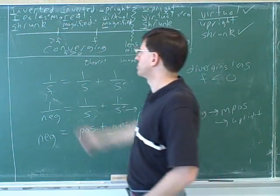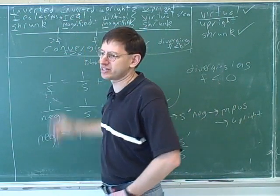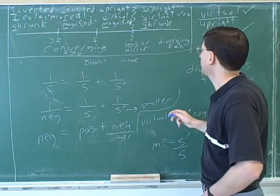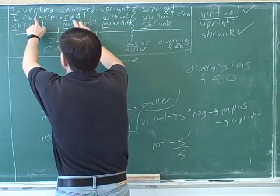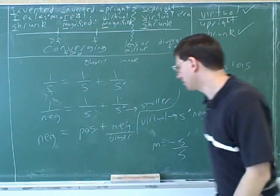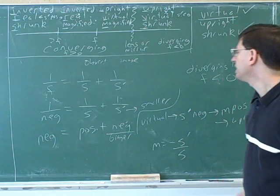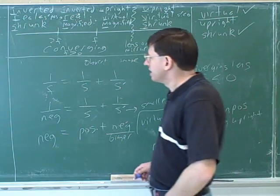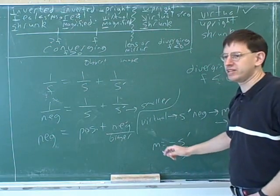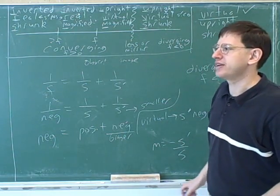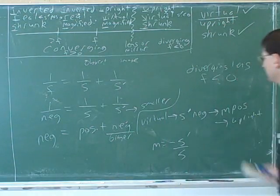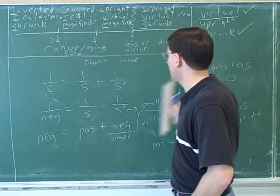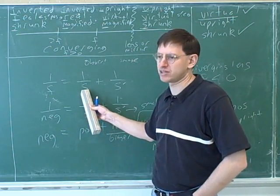Similarly, it's easy to mistakenly say 'it's real so the focal point is positive' — no, real tells you about the image distance. So now we have a new and improved table: converging means focal length is positive, diverging means focal length is negative. Anytime the image is virtual, the image distance is negative; anytime the image is real, the image distance is positive. The magnification tells you whether it's upright or inverted. And on simple problems, the object distance is always positive.